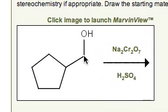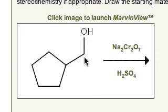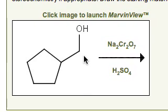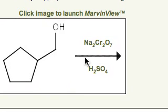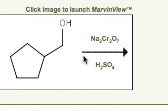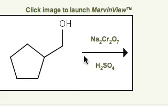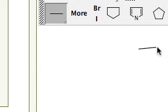In this case we've got our primary alcohol, and rather than using pyridinium chlorochromate, we're adding sodium dichromate in the presence of sulfuric acid. This is an aggressive oxidation in which we should expect to go all the way up to the highest oxidation level for this carbon, so rather than stopping at the aldehyde, we'll go ahead and oxidize all the way up to the carboxylic acid.